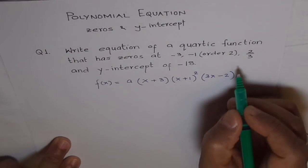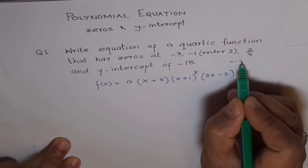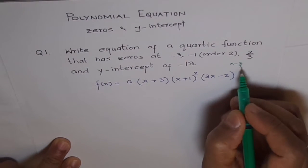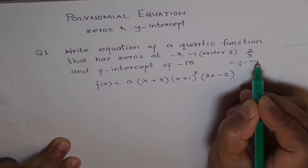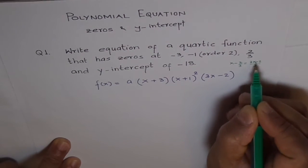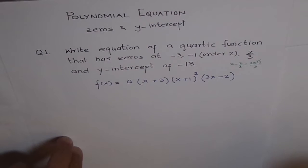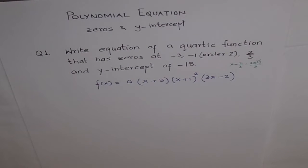Zero will be at x minus 2 over 3, correct? Now, this is equal to 3x minus 2 over 3, correct? That's the numerator part which gives you zero, correct? That's what we got here.